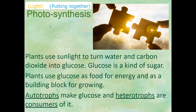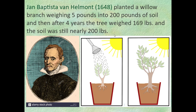Photo means light; synthesis means to put together. So photosynthesis literally means putting a structure together using energy from light. Plants use sunlight to turn water and carbon dioxide into glucose. Glucose is a kind of sugar that plants use for food and energy, and as a building block for growing. Autotrophs make glucose; heterotrophs are consumers of it.